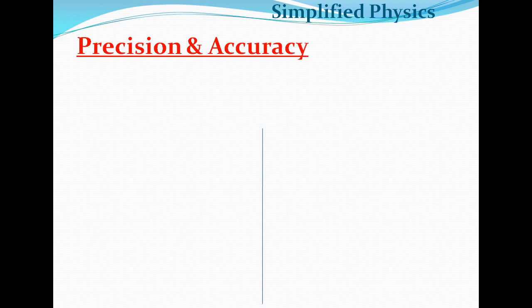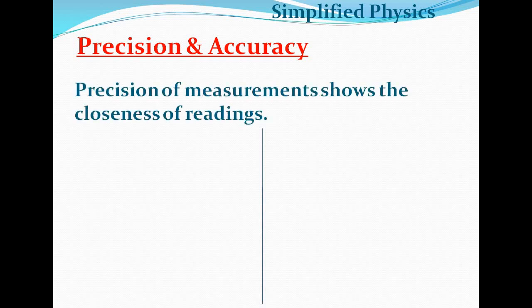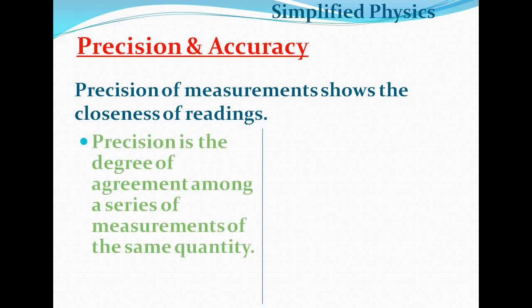Now let's look at precision and accuracy — these are two different concepts. Precision of a measurement shows the closeness of the readings. Precision means how close the different measurements are to each other. If we measure a quantity with an instrument and repeat the process, and the number of readings are closer to each other, then our precision is better.